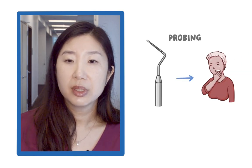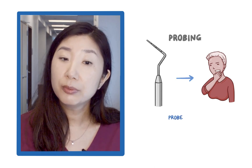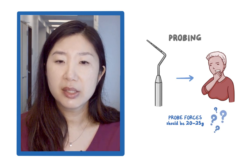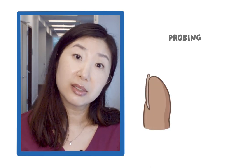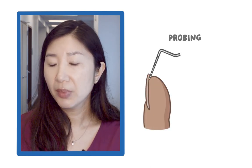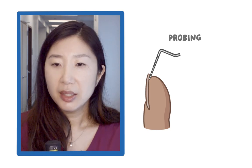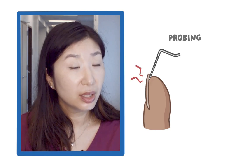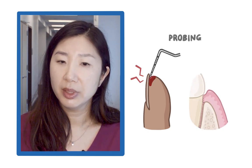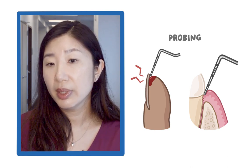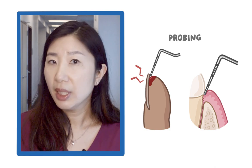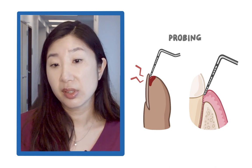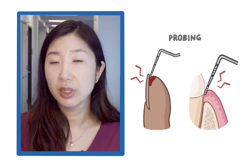Probing can be uncomfortable for some patients, perhaps because probing is done too forcefully. Probe force should be about 20 to 25 grams. To put this in perspective, imagine you want to measure how long your nail has grown — you take a probe and place it in the space between your skin and your nail, but if you use too much force it will go into the nail bed, it will not be accurate, it will hurt, and it might bleed. It is the same idea with periodontal probing. You want to probe the space between the tooth and the junctional epithelium to the bottom of the pocket without pushing too hard or separating the soft tissue attachment, because that will give you inaccurate assessment, deeper probing depth, pain, and bleeding on probing.